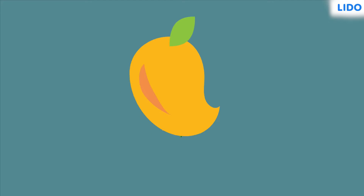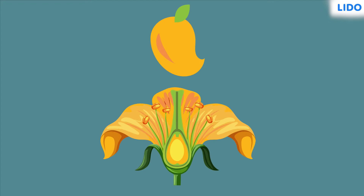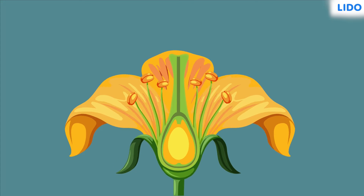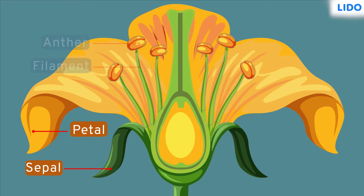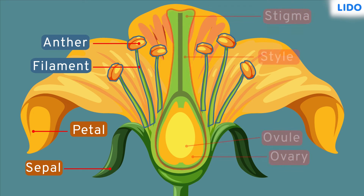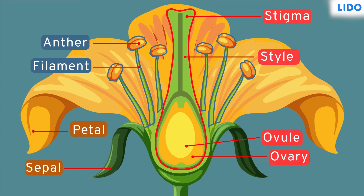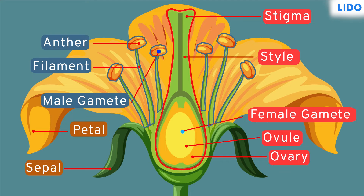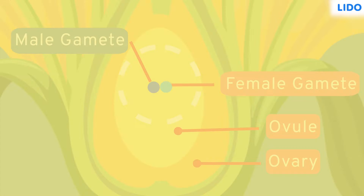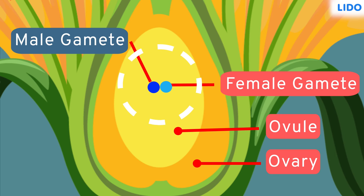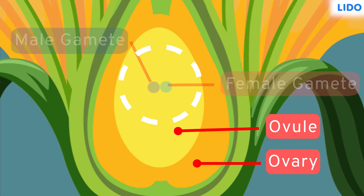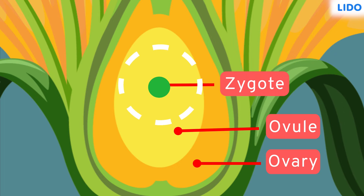The mango fruit sprouts out from a mango flower. The flower has both male and female parts that produce male and female gametes respectively. These male and female gametes of the flower fuse to form a zygote.